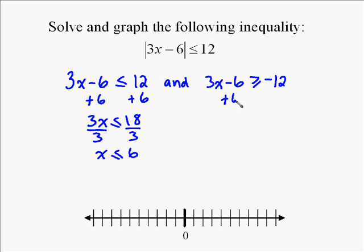We go solve the other one. Again, we're going to add 6 to both sides, giving us 3x greater than or equal to a negative 6. Divide by 3 and we have negative 2.